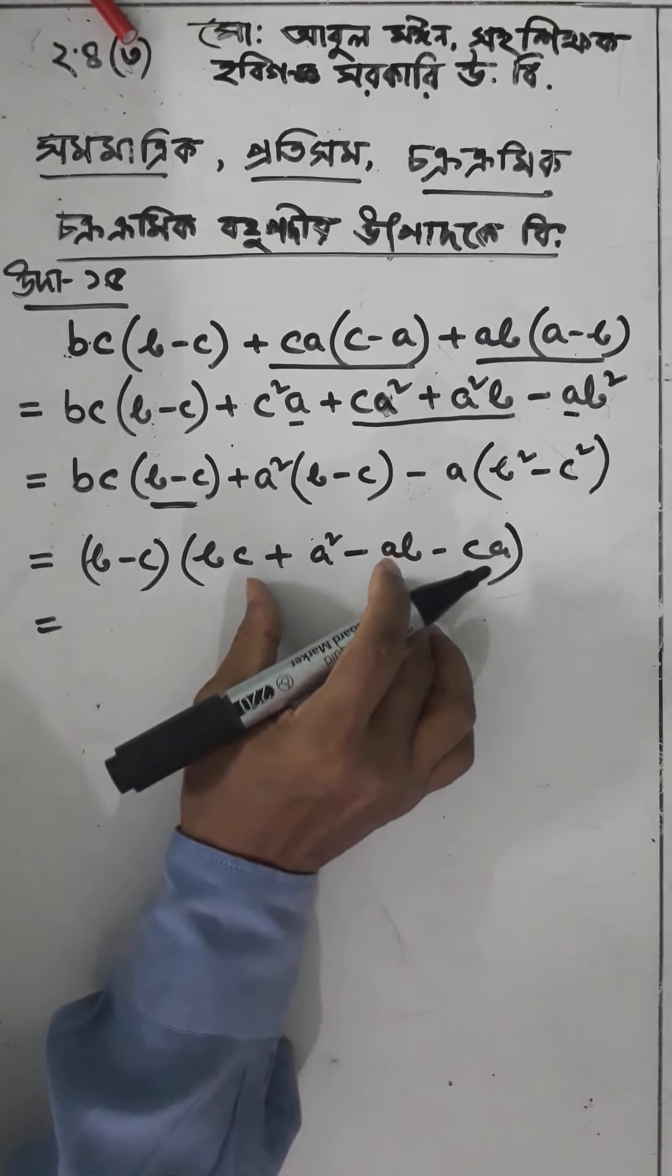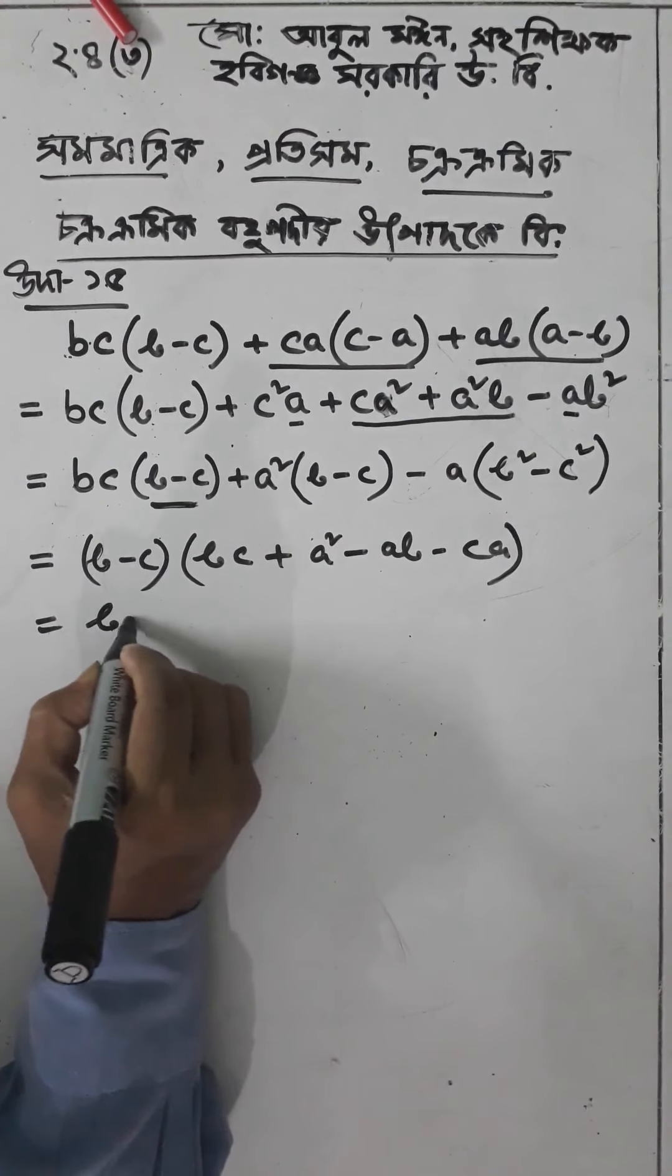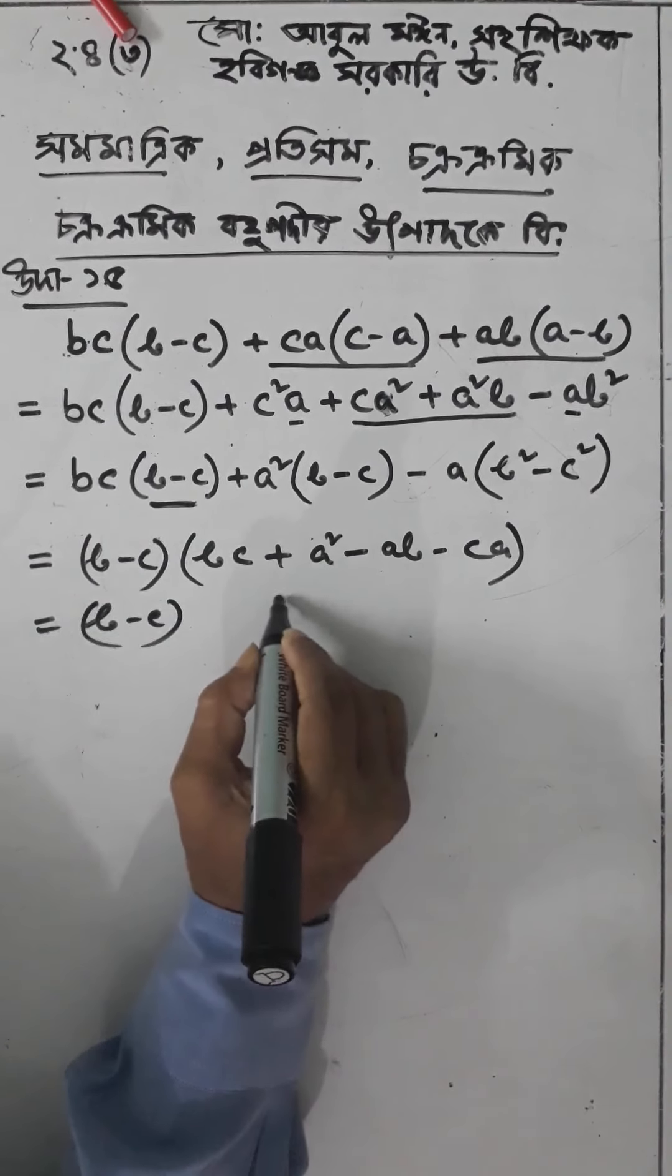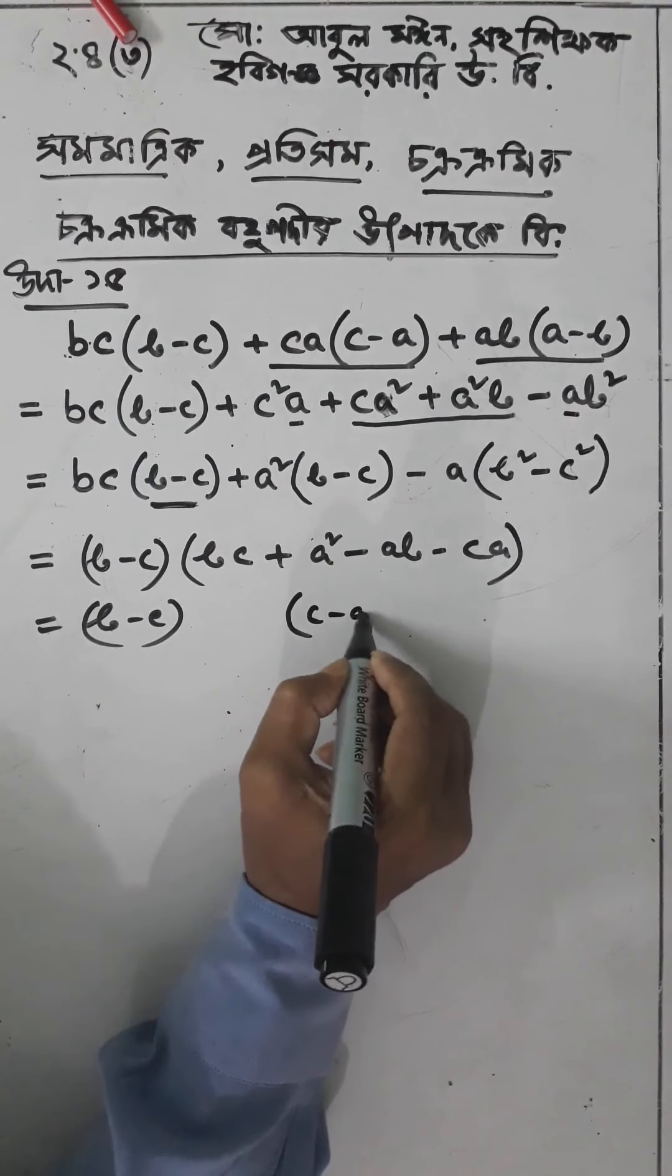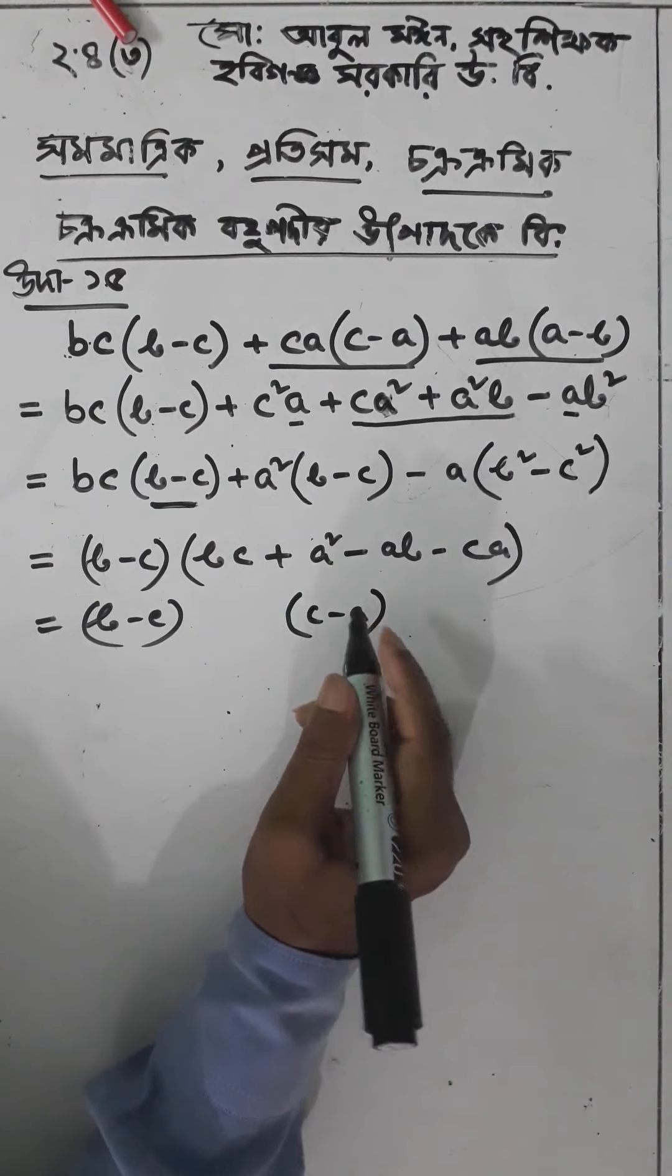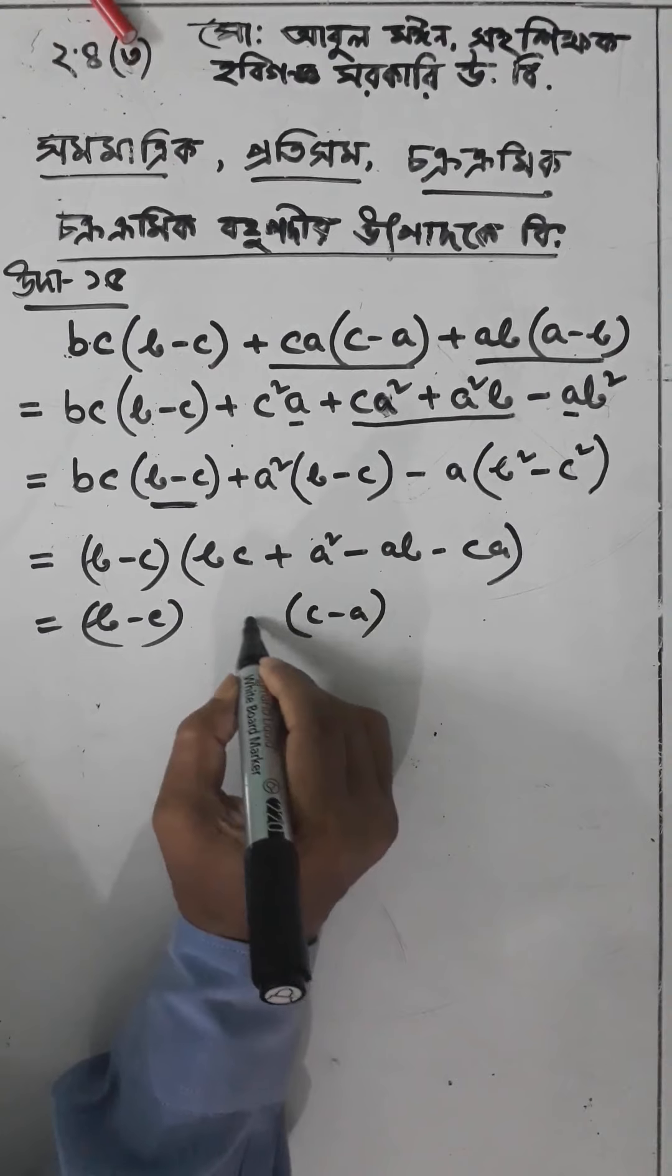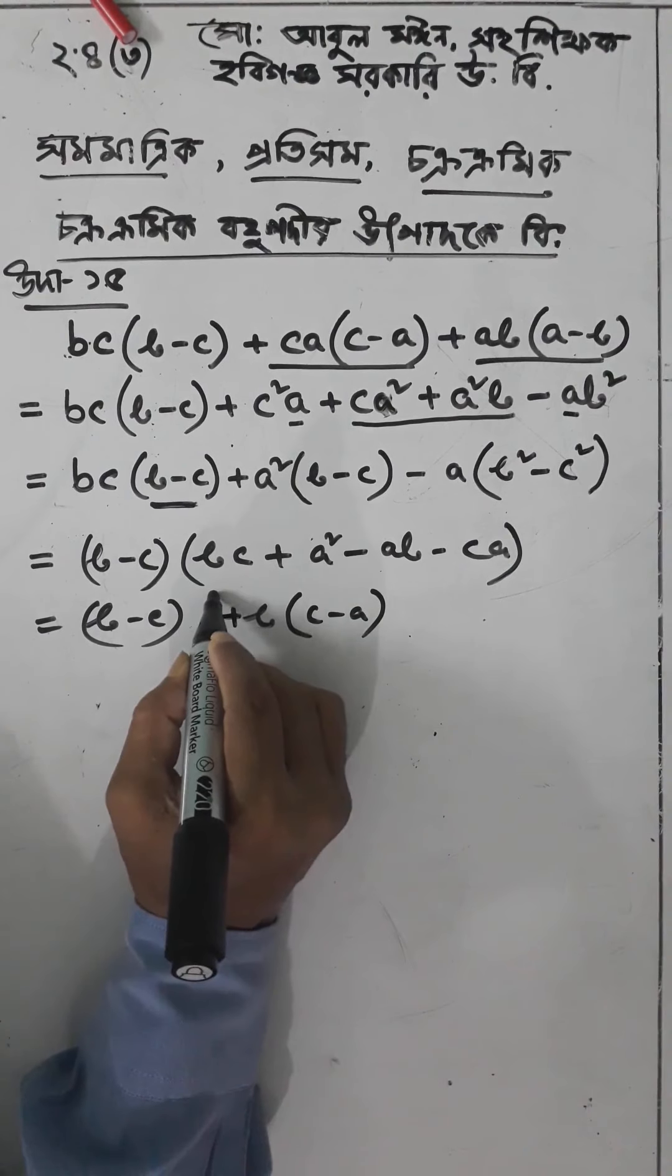Taking a common gives us a into c minus a. When we take common factors, we get bc minus a. This equals b minus c into bc minus a.